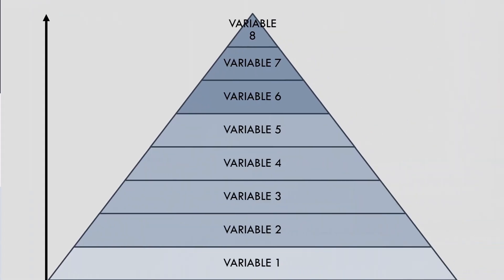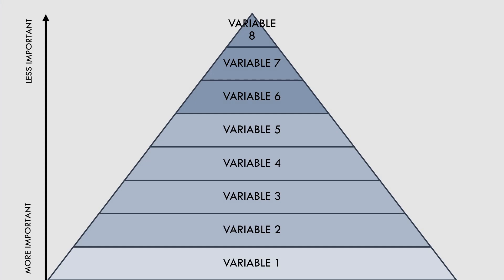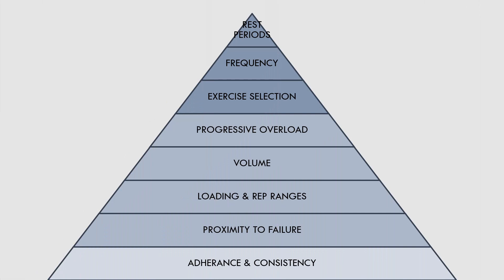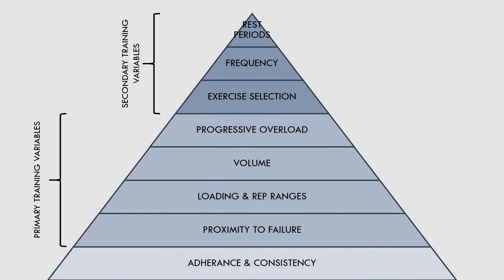As we can see here, we have a pyramid of variables which are important for hypertrophy training. The factors at the bottom of the pyramid are the most important and those at the top are less important. We also have two categories of training variables: primary and secondary. The primary variables are proximity to failure, loading and rep ranges, volume, and progressive overload. And the secondary variables are exercise selection, frequency, and rest periods.